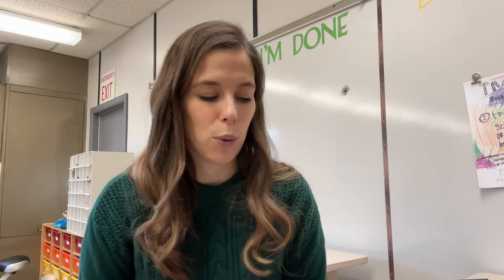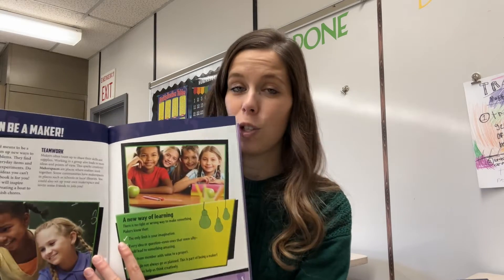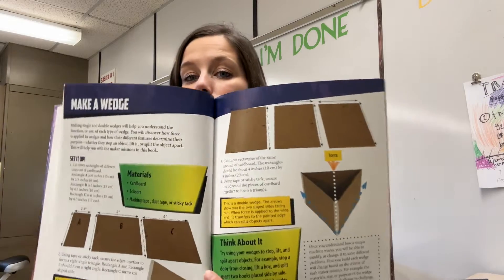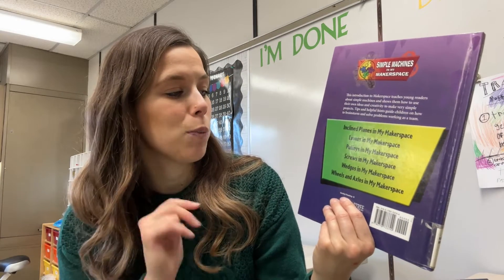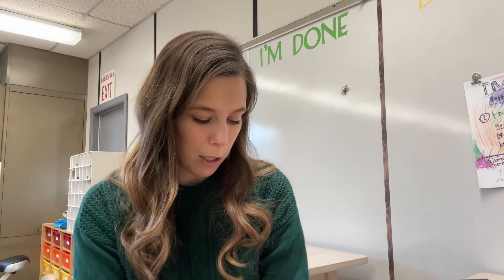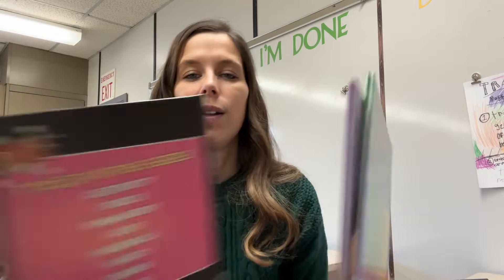The next two books are from a similar lineup. There's Screws in My Makerspace and Wedges in My Makerspace. They have a lot of text for kids to read to get information, but they also invite kids to do little experiments — for example, showing you how to make a wedge out of cardboard. There's a whole series: inclined planes, levers, pulleys, screws, wedges, and wheels and axles in my makerspace. I only grabbed two, but I would use these as inspirational books. Wedges in My Makerspace is by Tim Miller and Rebecca Sjoner.